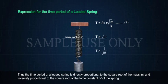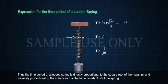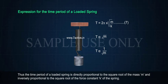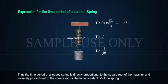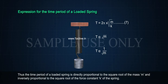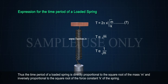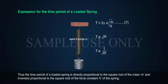Thus, the time period of a loaded spring is directly proportional to the square root of the mass M and inversely proportional to the square root of the force constant K of the spring.